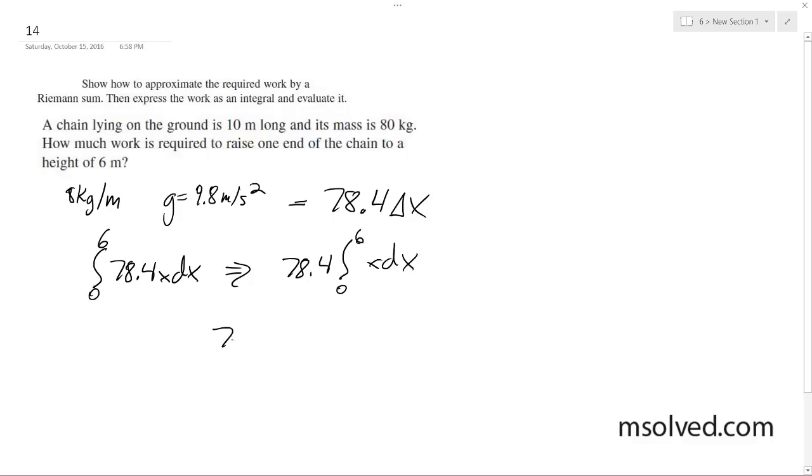We end up with 78.4, x squared over 2, 0 to 6. So we get 78.4, 36 over 2, and finally it's 1,411.2 joules.